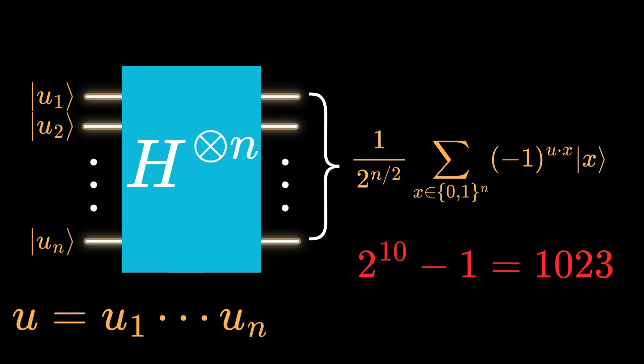Did you see what just happened? We created the superposition of all possible 2 to the n members of the input space with just n Hadamard gates.